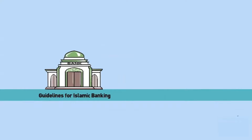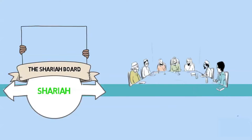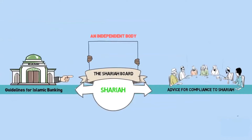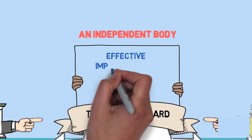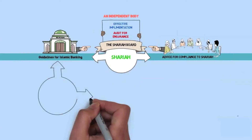Let us see who provides guidance to an Islamic bank on Sharia. It is a Sharia board. A Sharia board is an independent body that consists of Sharia scholars. Each Islamic bank is required to appoint an independent Sharia board, which will advise them on how the Islamic banking activities should be done in a Sharia-compliant manner. The Sharia board checks whether the Sharia guidelines are implemented effectively by the Islamic bank, and a regular Sharia audit is conducted to ensure this.